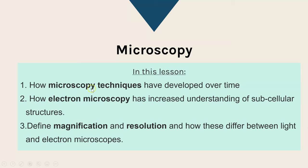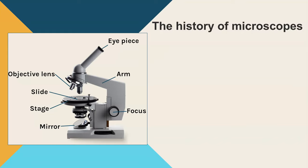In this lesson we're going to be looking at how microscopy techniques have developed over time, how electron microscopy has increased the understanding of the inside structures of a cell, and looking at what we mean by magnification and resolution and how those differ between light and electron microscopes. You do need to know a little bit about the history of the microscope, and you could be asked to label the different structures and parts of a microscope because it is one of your required practicals to know how to use a microscope.